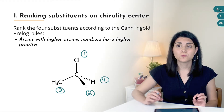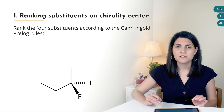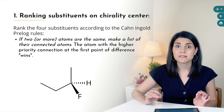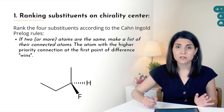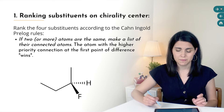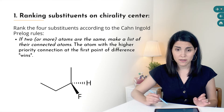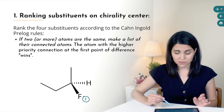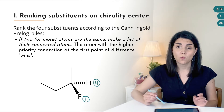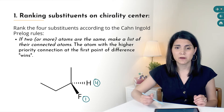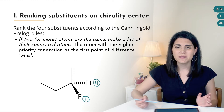Sometimes two of the directly connected atoms are the same. In this example, the chirality center has a hydrogen and a fluorine as well as a methyl and an ethyl group. Fluorine has the highest atomic number of those directly connected atoms, so it's priority one, and hydrogen has the lowest priority, number four. But how do we decide between the two carbon atoms?